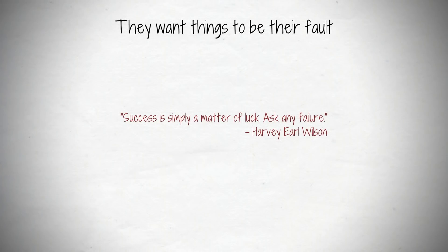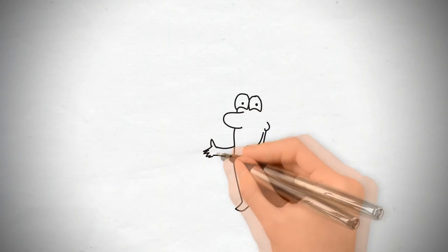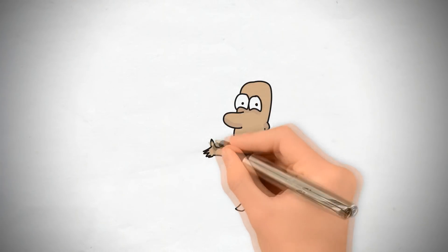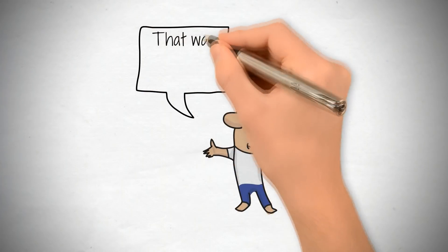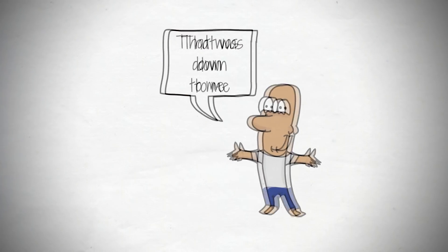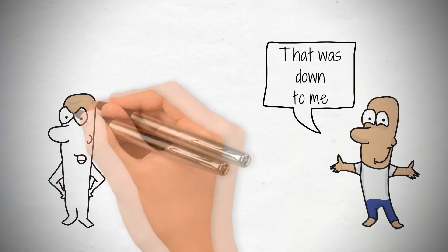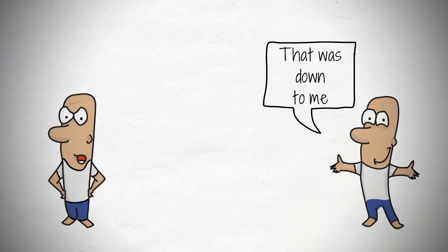This is the most counter-intuitive of the three success mindsets. It's also the most emotionally difficult. It goes against human nature and against your ego. Highly successful people want everything that goes wrong to be their fault. We all want the future to be in our control, but most people like to think that their past failures were outside of their control, that nothing was their fault.